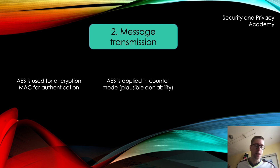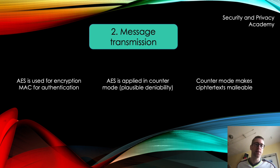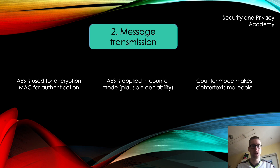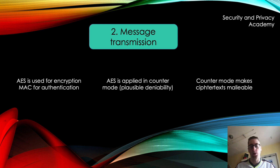What that means in detail I'll discuss in another video. Just know that modified ciphertexts still decrypt to a valid plaintext — so if you modify a ciphertext, it still decrypts to something meaningful, not nonsense. An adversary can thus forge conversations in a way that allows the conversation partners to claim it was not their message but indeed a forged one. So if a message appears somewhere, you can say that wasn't me, because the protocol actually allows adversaries to forge messages.